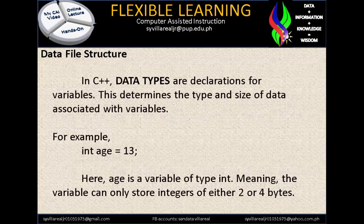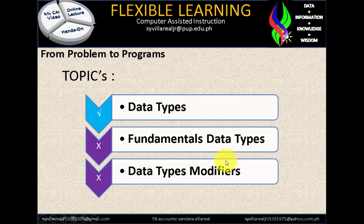In C++, data types are declarations for variables. This determines the type and size of data associated with variables. For example, int age = 13. Here, age is a variable of type int, meaning the variable can only store integers of either 2 or 4 bytes in terms of memory capacity, external and internal.